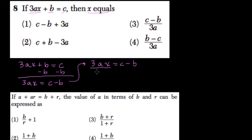That's the last step. Divided by 3a. These cancel out, right? And x equals c minus b over 3a, which is choice 3.